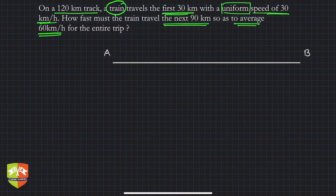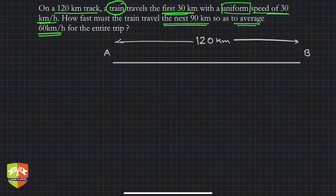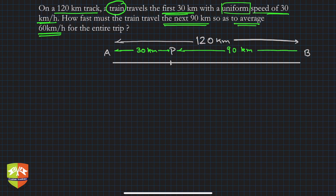So this is the 120-kilometer track — please be very careful about the units, it is 120 kilometers. Let's say this point is A, this point is B, and the endpoint. The first point P divides it such that AP is 30 kilometers and PB automatically becomes 90 kilometers. The diagram gives a lot of clarity.